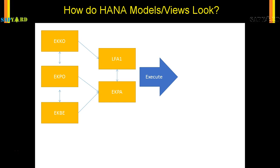When you execute the model, SQL queries are written automatically for you in the backend. It is like a program is written for you, and when you execute that program you get the output. So out of these five linear tables you get a multi-dimensional output — with data from the PO header, data from the vendor, data from the PO history, everything. This is the output you get after you run the model.